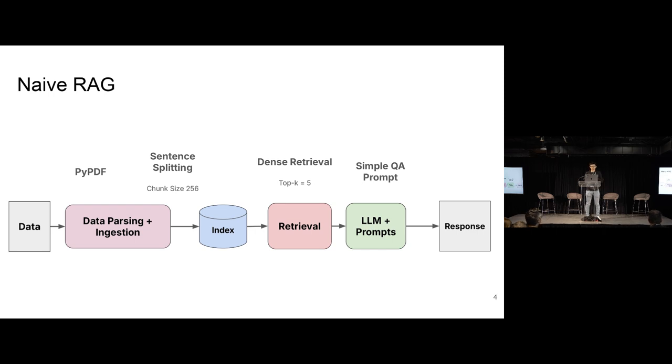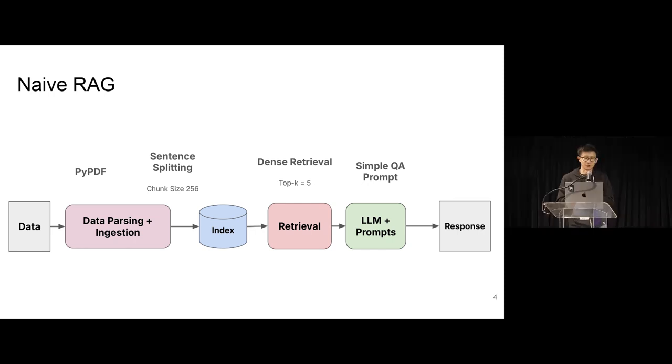You do some naive parsing using an open source parser. You do some naive splitting. You just split your pages down the middle every few sentences or so, every paragraph. You do top K dense retrieval, and then you stuff it all into a prompt. So if you've built RAG systems, this pattern should seem relatively familiar to you.